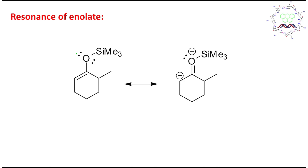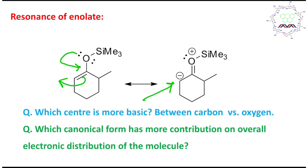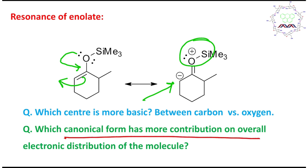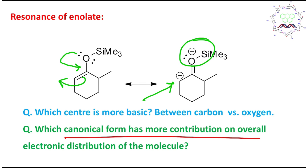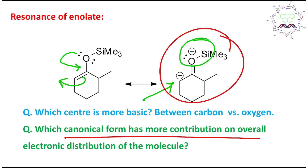What happens in this case is that this lone pair of electrons participates in resonance. Ultimately, the electron density is greater on the carbon. So you may consider that this carbon has more electron density, and this oxygen is carrying a partial positive charge. A simple question you may think: which canonical form has more contribution in the overall electronic distribution of this molecule? Obviously the neutral one — because in the second canonical form, charge separation is observed, and charge separation is always associated with some destabilization.